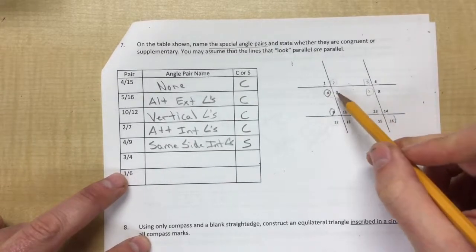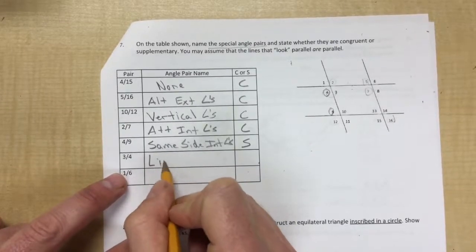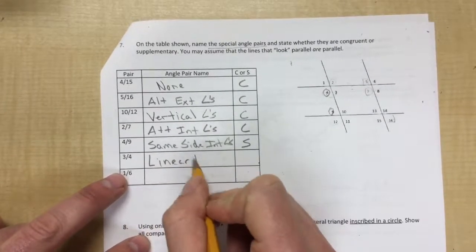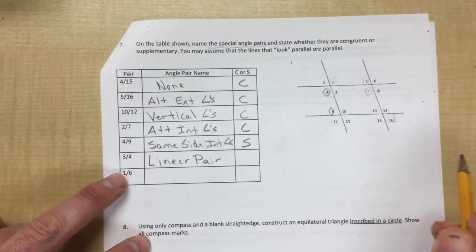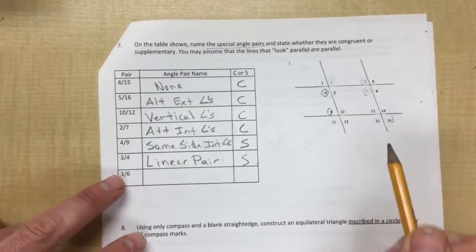Okay. Three and four. We got three and four right next to each other. The angles that are next to each other have the name linear pair. And they look different. So they are supplementary.